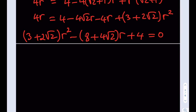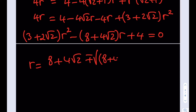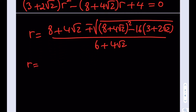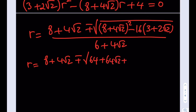We apply the quadratic formula: r = [ (8+4√2) ± √((8+4√2)² − 4·(3+2√2)·4) ] / [2·(3+2√2)]. Squaring (8+4√2) gives 64 + 64√2 + 32, and 4ac gives 16·(3+2√2) = 48 + 32√2. The discriminant under the radical is 64+32 − 48 plus 64√2 − 32√2, which is 48 + 32√2.